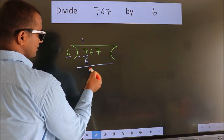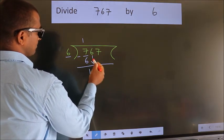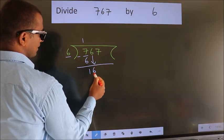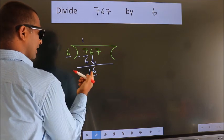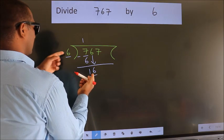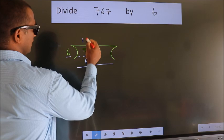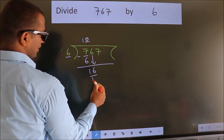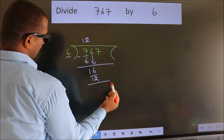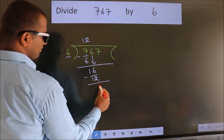After this, bring down the beside number. So, 6 down. So, 16. A number close to 16 in 6 table is 6 twos, 12. Now, we subtract. We get 4.